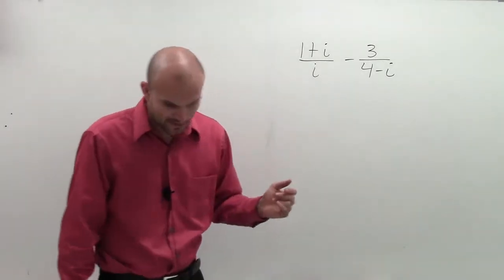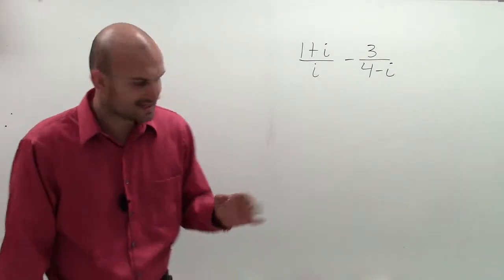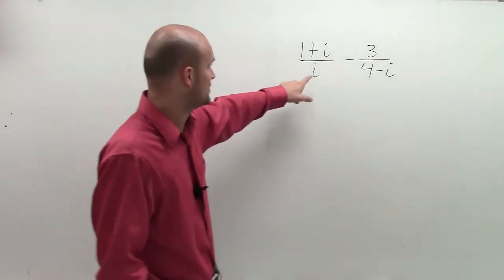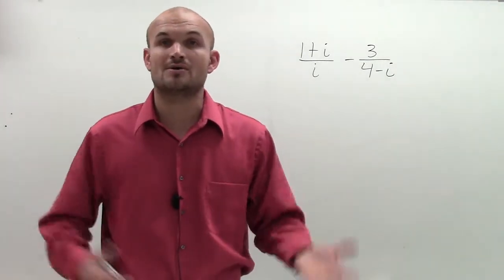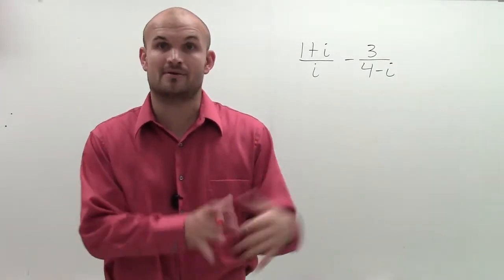So to do this, the first thing I'm going to do is get the common denominator. Obviously, we notice that i and 4 minus i are not common denominators. So the simple trick to always get common denominators, it's not always the least common denominator, right, when you're doing fractions like with numbers.